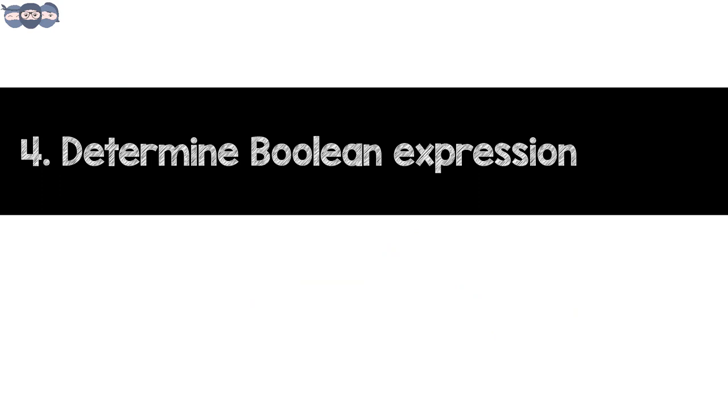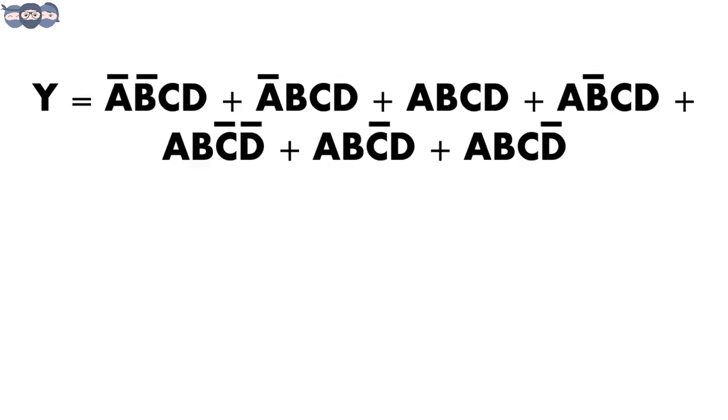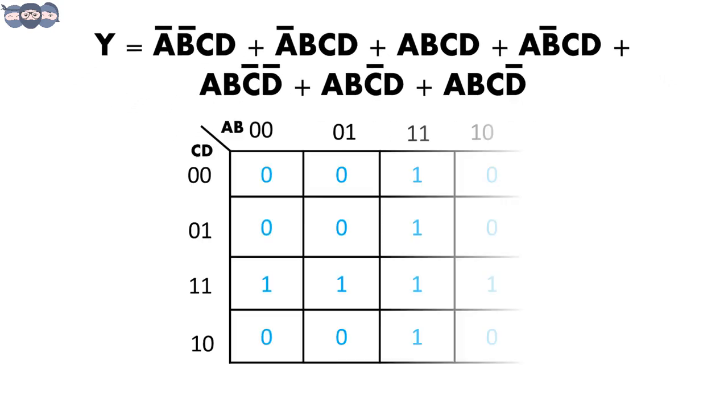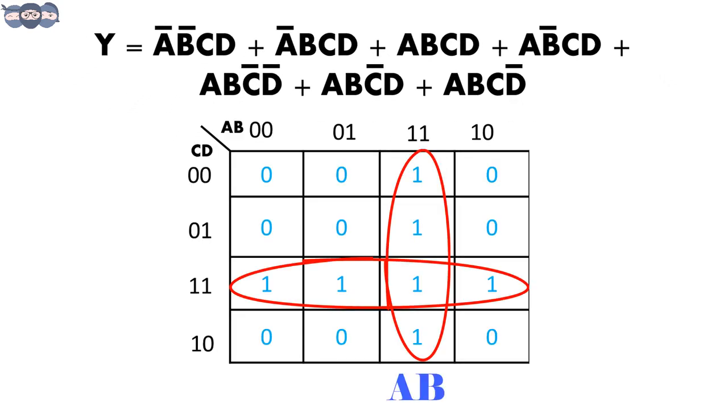The last step is to determine the Boolean expression. For the expression shown on the screen, first let's update the kmap and group the ones. The term A, B is common in these cells, whereas here it is C, D. We write these product terms and sum them here, thus obtaining the sum of products.